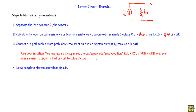In this series I am going to show you several examples of Norton equivalent circuits. Norton's theorem states that we can reduce any two-terminal linear bilateral network to a current source I_n in parallel with a resistance R_n. This simplified circuit is known as the Norton equivalent circuit.